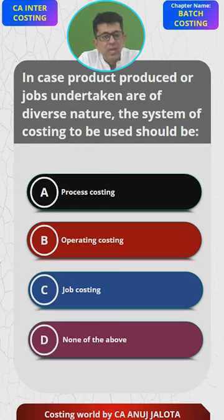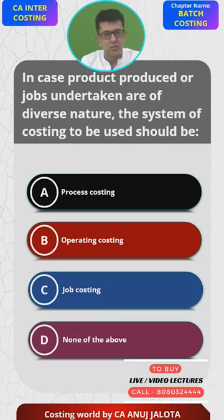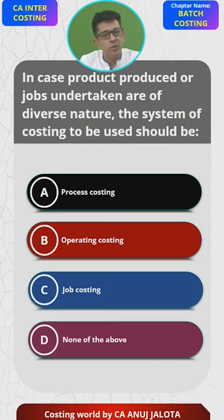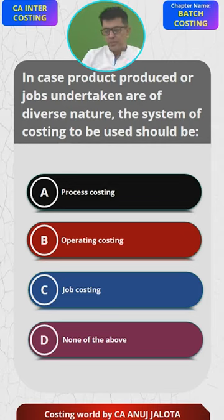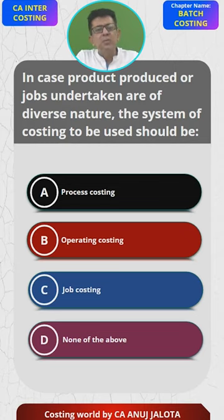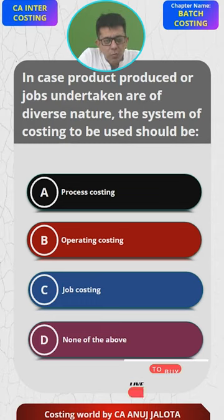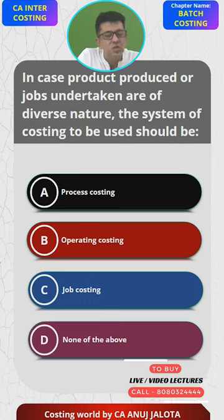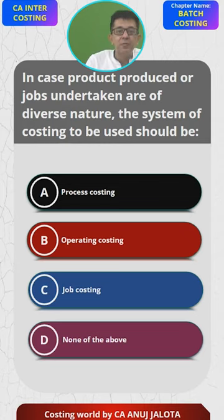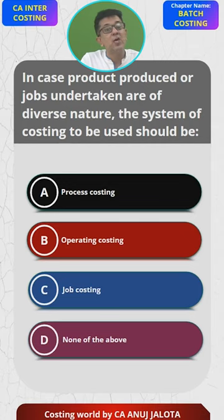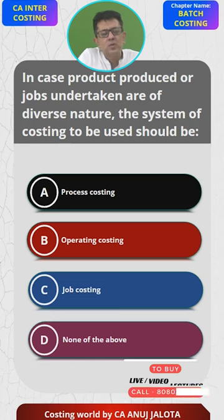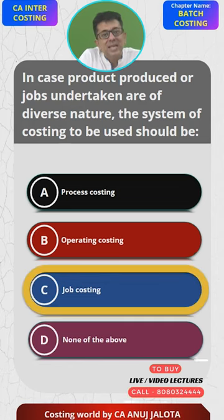But if a company is going to take orders from customers and manufacture each unit differently, they follow job costing. For example, a tailor near your house — for him, each unit is different. Every customer is different, requiring different raw materials, different hours of labor, and different efforts to complete the dress. Such companies follow job costing. So the correct answer is C — job costing.